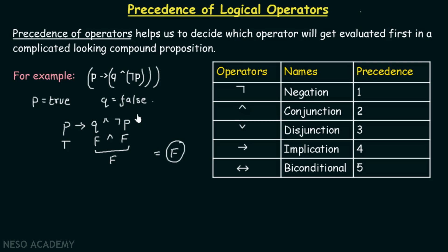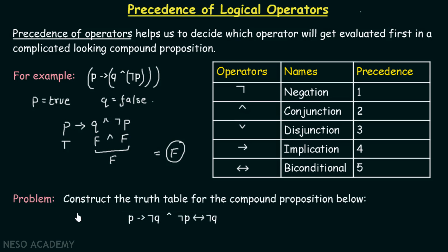The truth value of the compound proposition P implies q and not P is false. If we proceed without using the precedence table, it may produce a different result. Therefore, precedence of operators is very important. Now let's consider a new problem: construct the truth table for P implies not Q and not P, biconditional not Q. This involves a biconditional operator, negation operators, conjunction operator, and implication operator.